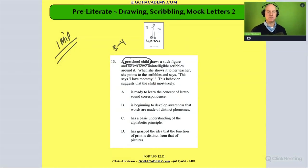This behavior suggests the child most likely: A is ready to learn the concept of letter sound correspondence. B is beginning to develop awareness that words are made up of distinct phonemes. C has a basic understanding of the alphabetical principle, or D has grasped the idea that the function of print is distinct from that of pictures.